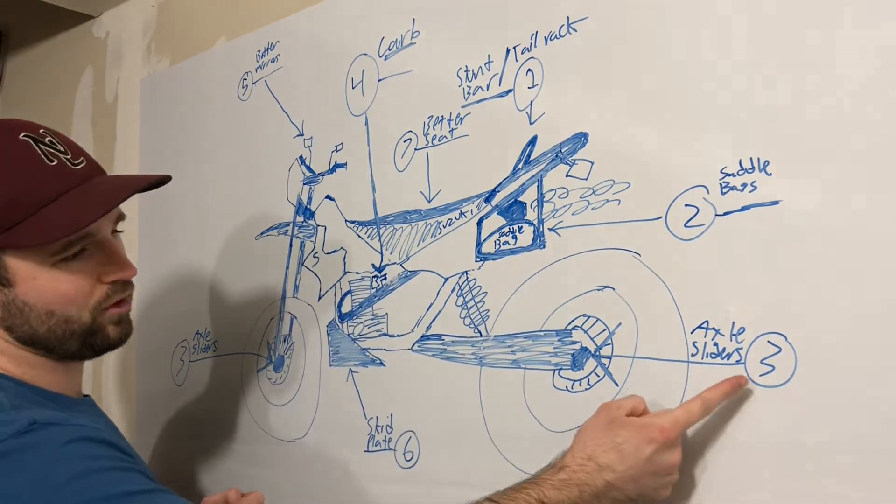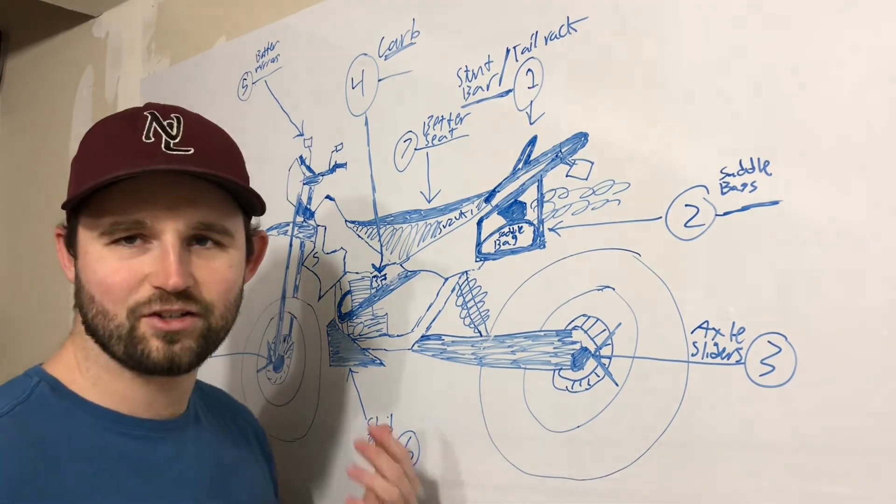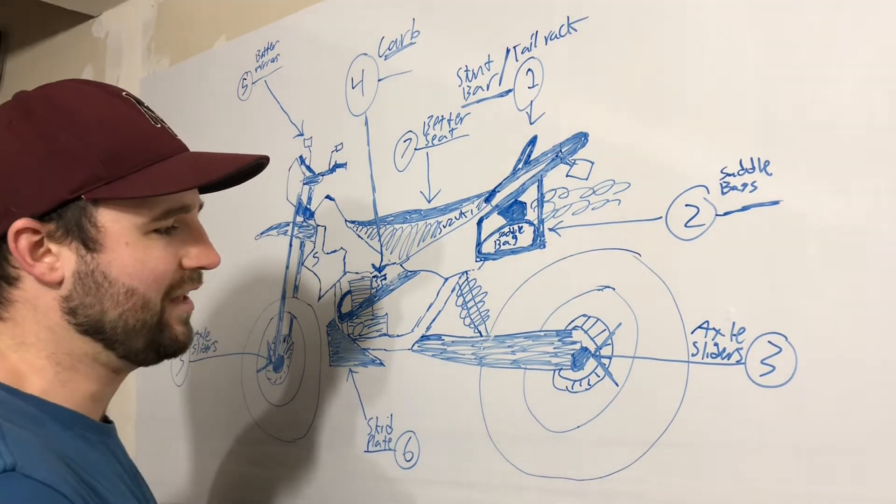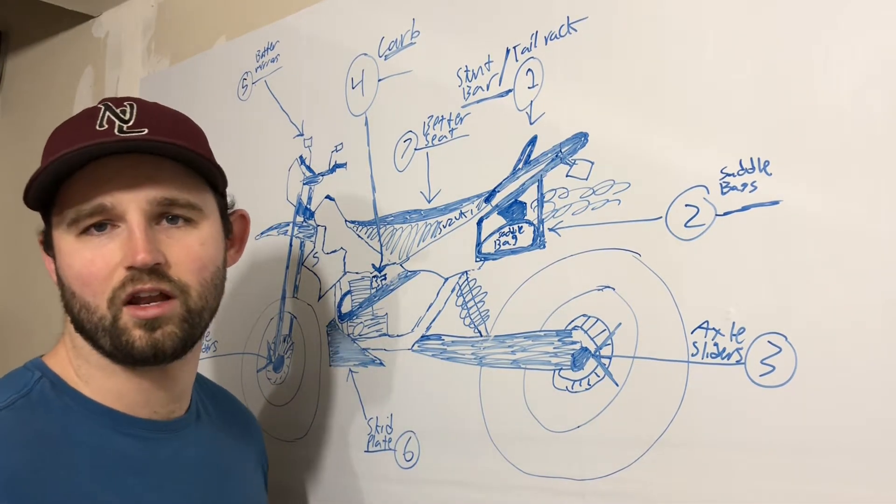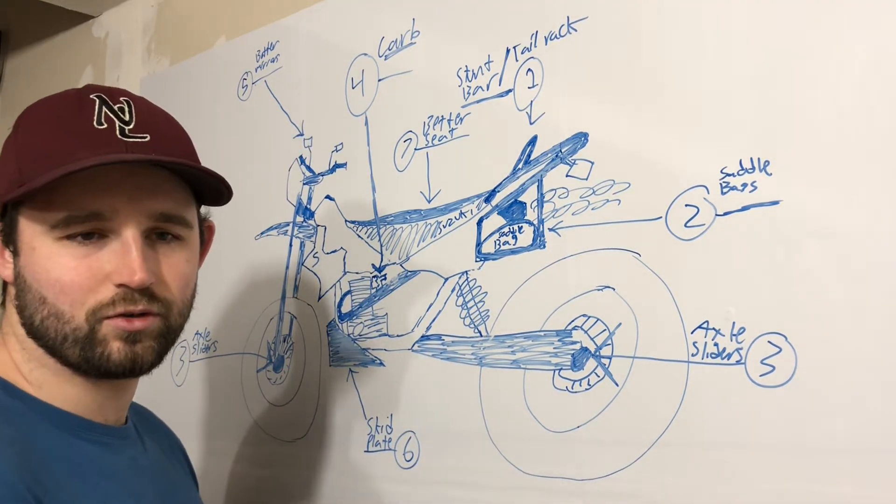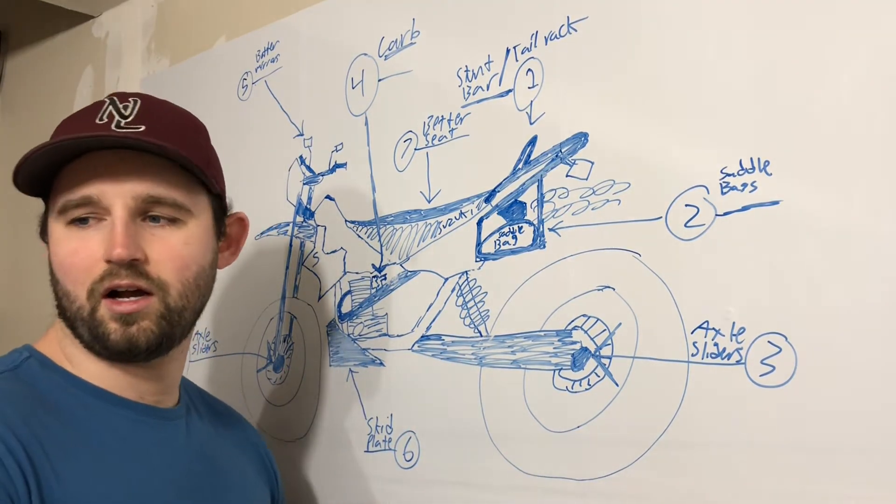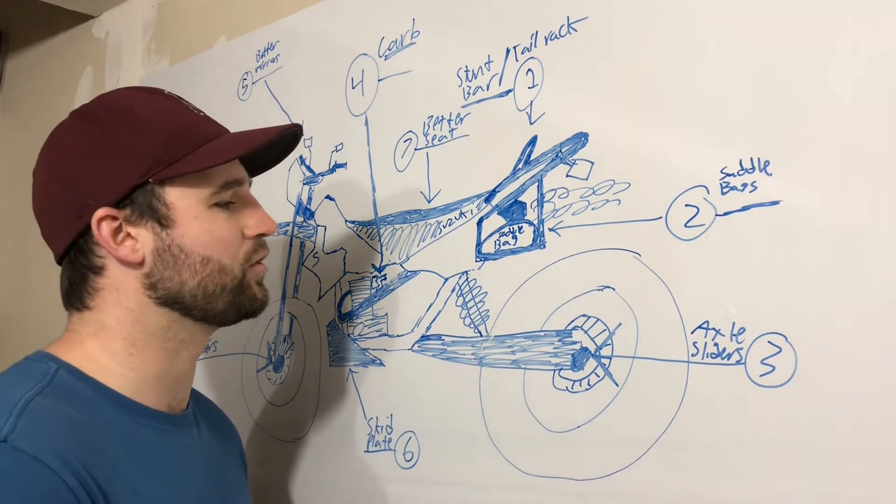Coming down to number three, I just wanted to put this on here. Axle sliders for more protection in case you go down. I think they'd be good, you know, I'm on the track, out on dirt stuff, in the stunt lot, if I learned how to stunt, just in case I dropped the bike. Supermotos do get dropped quite a bit. So hopefully that'll help save me from some sadness in the future.